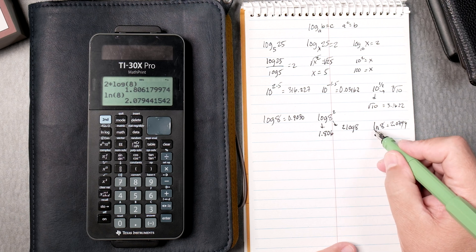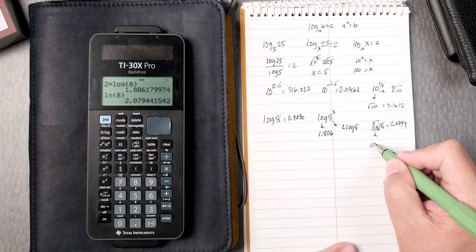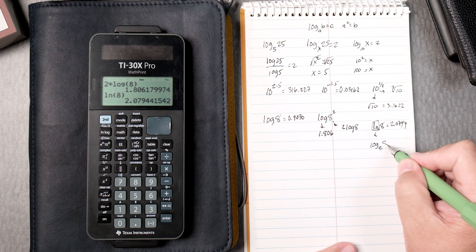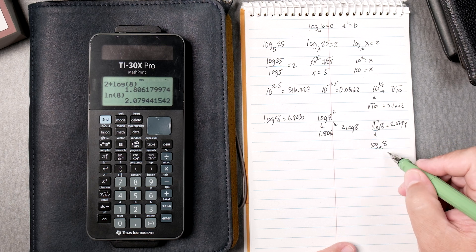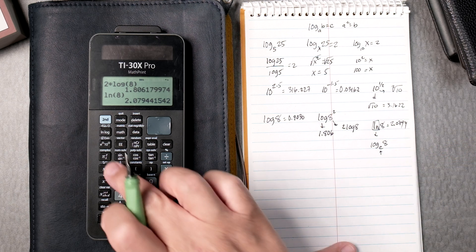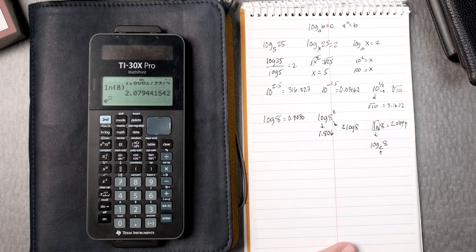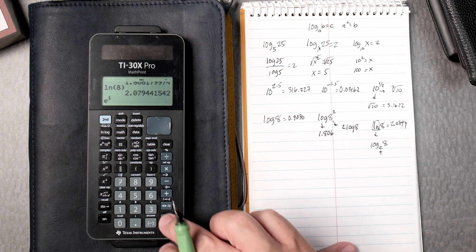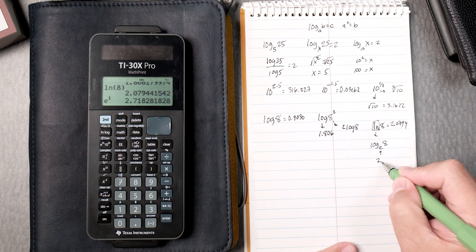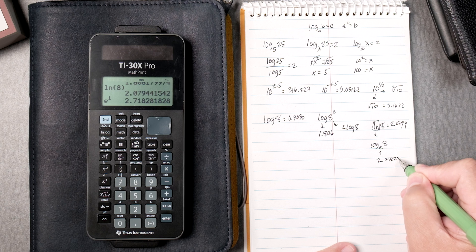This, by the way, the natural log is really the log base e of 8. Okay, what is e? Well, if you press the e blank space, you type a 1, it gives you 2.71828 and keeps on going.